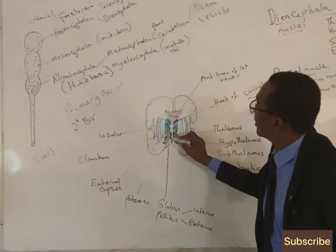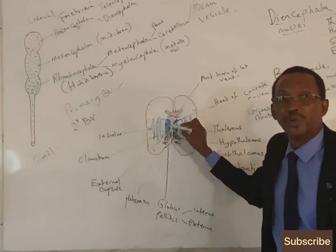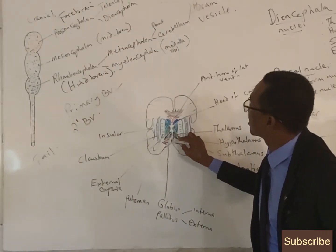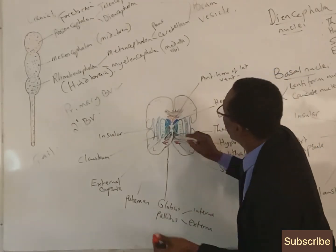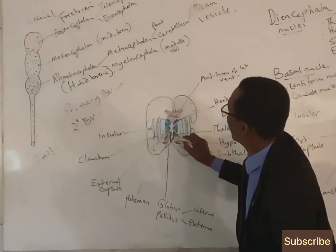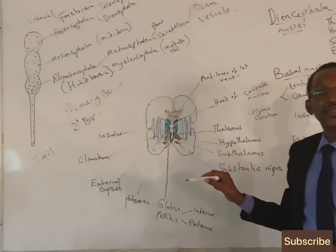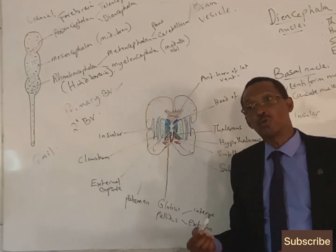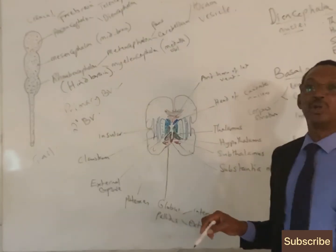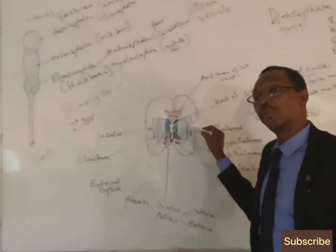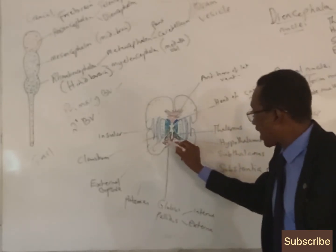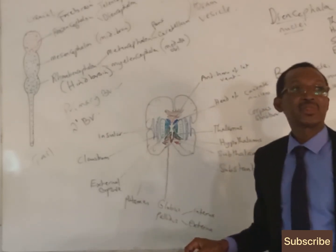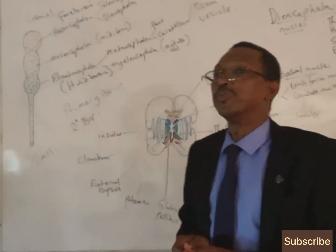The hypothalamus is a sheet of gray matter just below each thalamus — one sheet on each side. It is called hypothalamus because it is a group of nuclei that lie below the thalamus. Under each thalamus — not below but under — is another group of nuclei known as the subthalamus. There is a distinction between 'below' (hypo) and 'under' (sub).